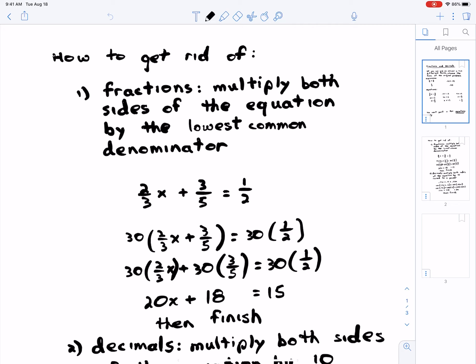So if we have two-thirds x plus three-fifths equals a half, the common denominator for that would be 30, so you multiply both sides by 30. And then you distribute on the left-hand side, you distribute the 30. Why do we distribute? Because there's a plus sign. Remember, you distribute to terms, and these are terms. So we multiply each one by 30.